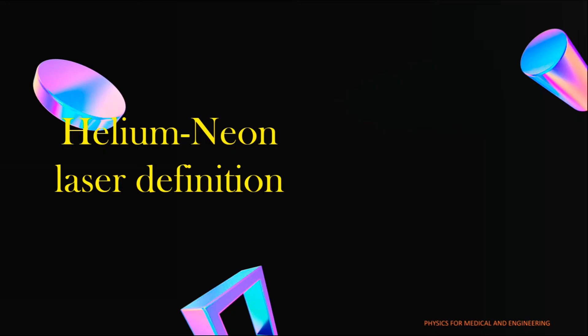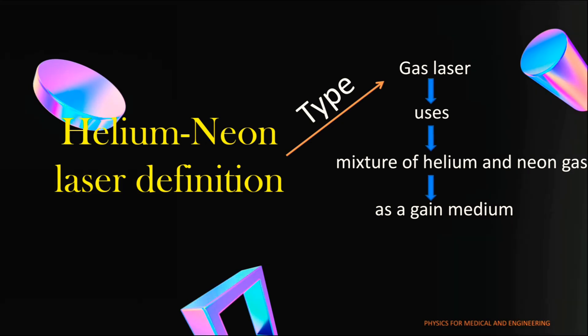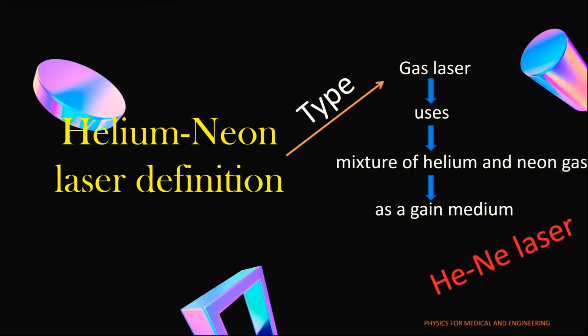Helium neon laser definition: helium neon laser is a type of laser in which a mixture of helium and neon gas is used as a gain medium. Helium neon laser is also known as He-Ne laser.